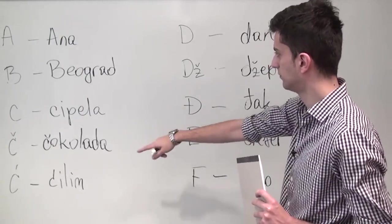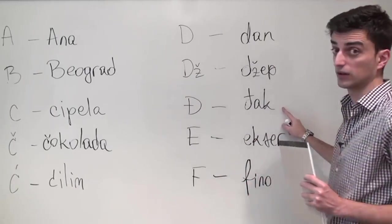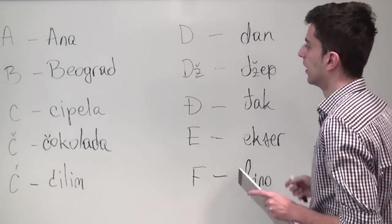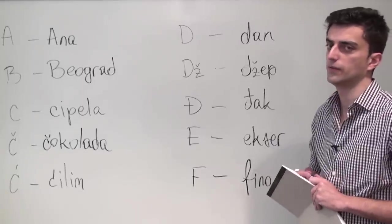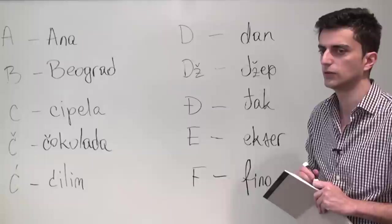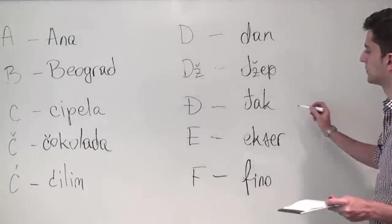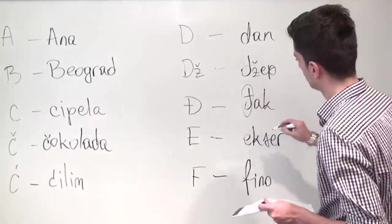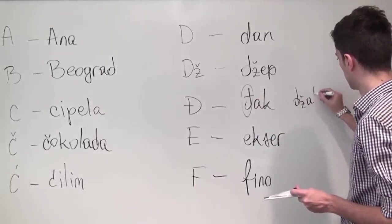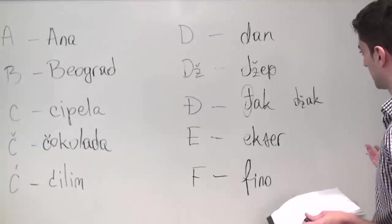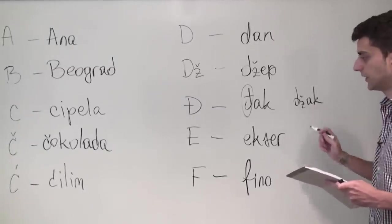Đ, like I said, corresponds to Ć, and a good example is the word đak meaning student. Now when I ask you to differentiate between the two, I'm doing that for a reason, because if you mistake the two you can very easily change the meaning of the word. So if we take the word đak and replace this Đ with a Dž what we get is džak, which in BCS means a sack.